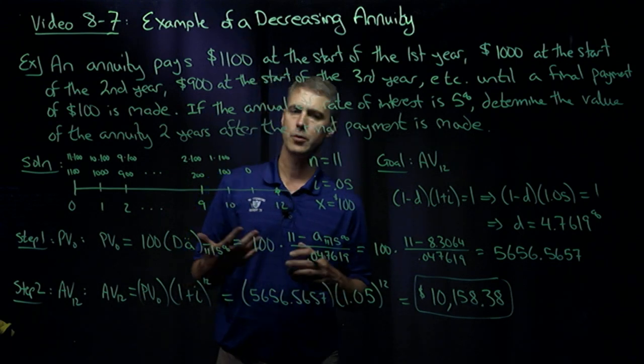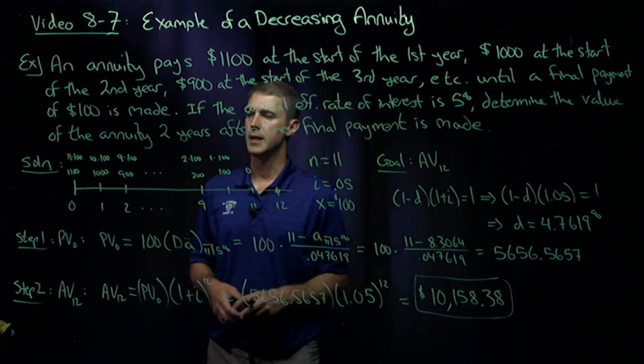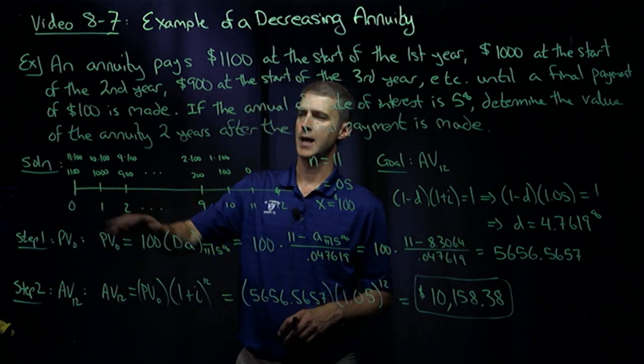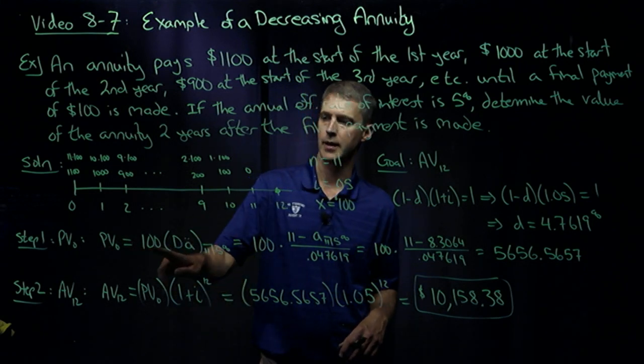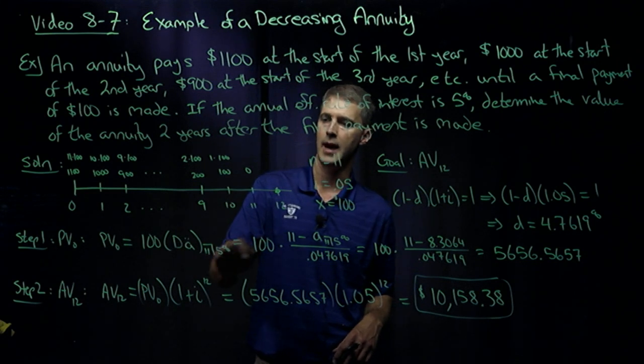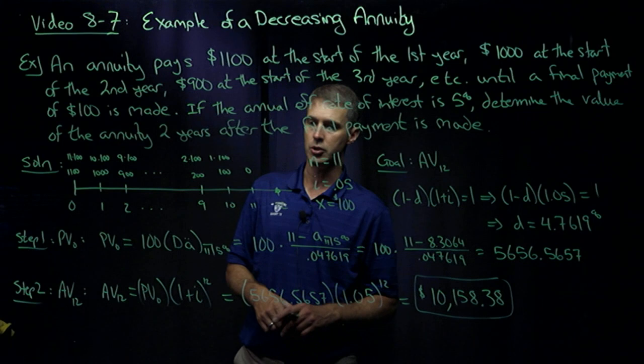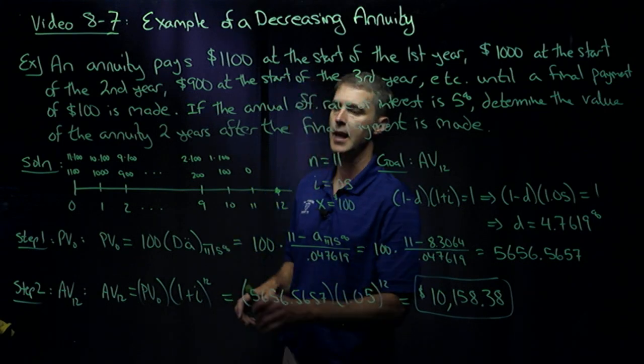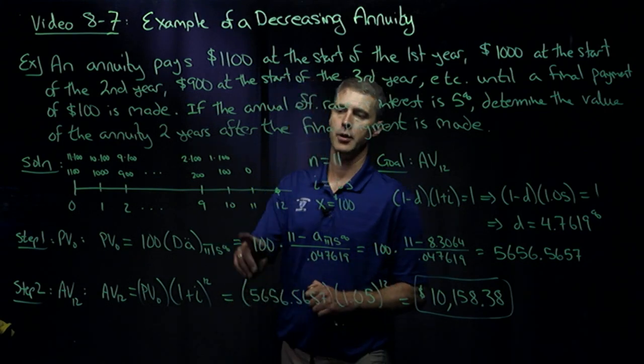Okay, so my first step, once I've got my D, is to figure out the present value of this cash flow. So the present value, it looks like my formula would say X, D, A double dot N, I. So 100, present value of a decreasing annuity due that has 11 payments and an effective interest rate per period of 5%.